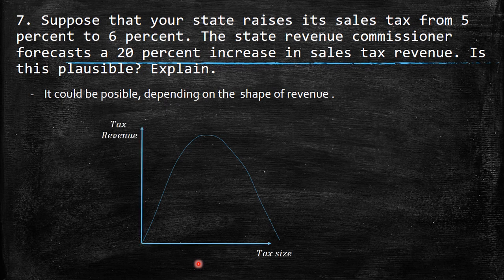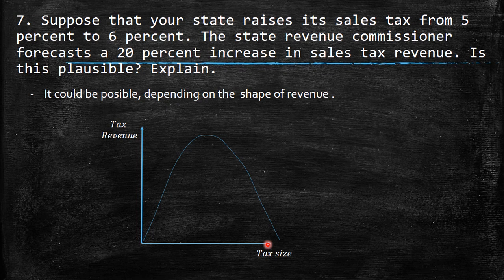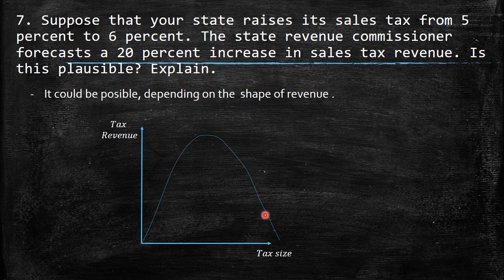We know that the tax revenue curve is going to be like a bell shape — on the y-axis we have the tax revenue and on the x-axis we have the taxes. The idea is that not because the government taxes more percentage are they going to have more revenue, because people don't buy more — they discourage transactions inside the market. If they charge a very low amount, the revenue is not going to be high either. So it's going to be a concave curve, meaning it has a maximum.